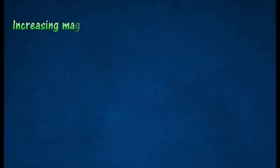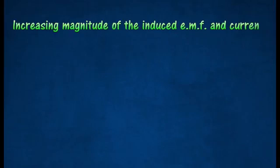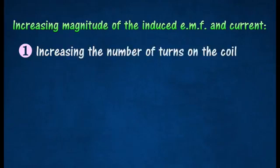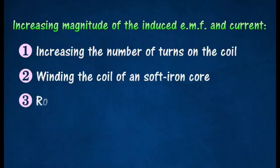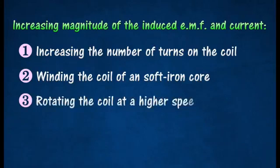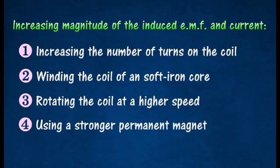The magnitude of the induced electromotive force and current produced by direct current generator can be increased by increasing the number of turns on the coil, winding the coil on a soft iron core, rotating the coil at a higher speed, and using a stronger permanent magnet.